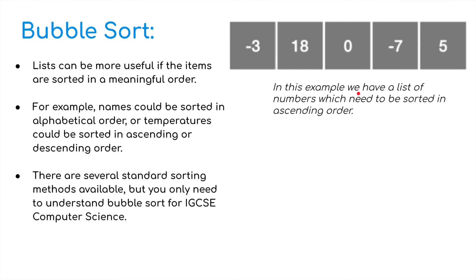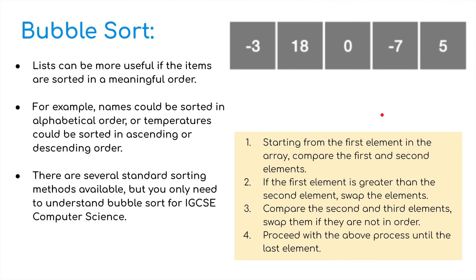So in this example, we have a list of numbers which need to be sorted in ascending order. So from the lowest number up to the highest number. So what are we going to do? Well, we're going to start from the first element in the array, in the list, and compare the first and the second elements, these two here. Because minus 3 is less than 18, there's no need to swap. We leave them where they are. So if the first element is greater than the second element, we're going to swap the elements. Then we're going to compare the second and the third elements and swap them if they need to be ordered. And proceed with the above process until the last element. So let's have a little look at that and break that down.